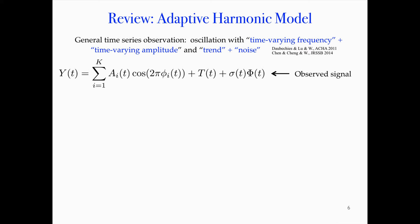This is the model we proposed starting from 2011, with theoretical results supporting it. The observed signal Y is composed by summation of k terms involving a(t), φ(t), and σ. The amplitude modulation a_i is a positive function that changes slowly — physiologically, the system doesn't change crazily. The φ is a monotonically increasing function, so φ' is positive. We call φ the phase function and φ' the instantaneous frequency.